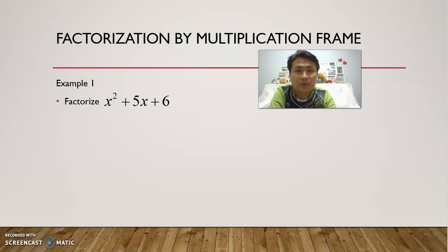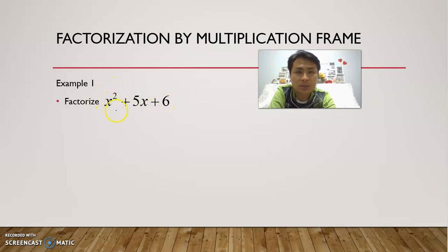Let's take a look at factorization by multiplication frame. Before we apply multiplication frame, we need to check our question and see whether we can actually apply it. There are two criteria: first, we must make sure that there are three terms in the question. Next, we must check that we do not have a common factor for all three terms. For example, if I want to take out common factor x, I have it here and here, but not in this term.